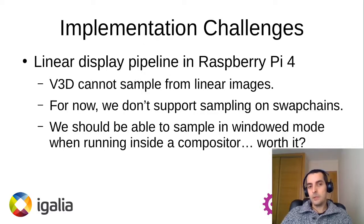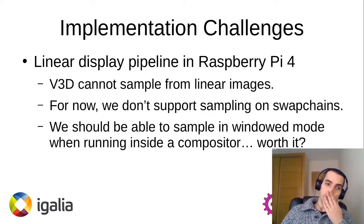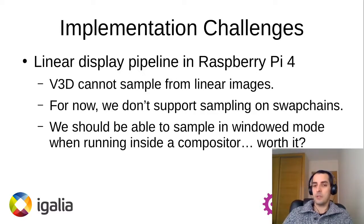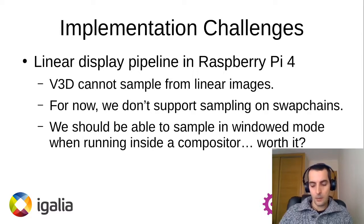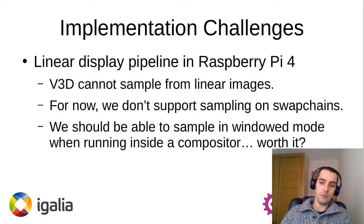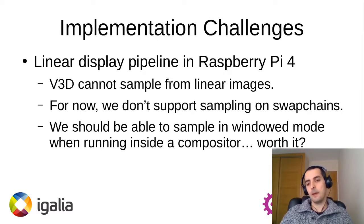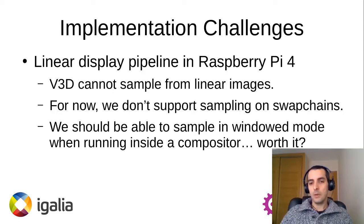There is also an issue about linear display on the Raspberry Pi, because the V3D hardware cannot sample from linear images. That means for now we don't support sampling on swapchain images. It would be possible to make that work when running inside a compositor, but we think it would be confusing — from a developer's perspective, it would be strange that this feature is not available in full screen but is available in windowed mode. So for now we are not supporting sampling on swapchain images, though we could revisit this in the future.